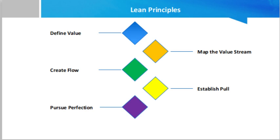The third principle is create flow. After removing waste from the value stream, the next action is to ensure that the flow of the remaining steps runs smoothly without interruption or delays. Strategies for ensuring smooth flow include breaking down steps, reconfiguring the production steps, leveling out the workload, creating cross-functional departments, and training employees to be multi-skilled and adaptive.